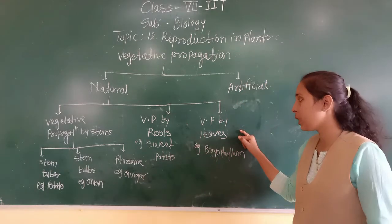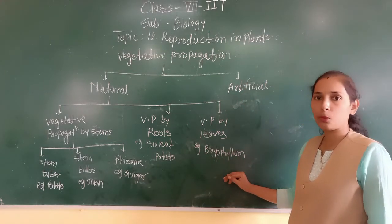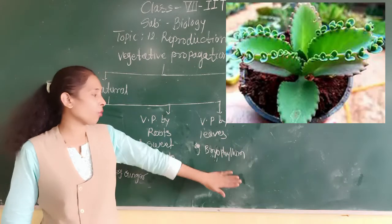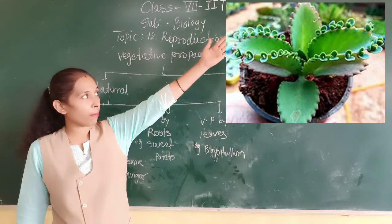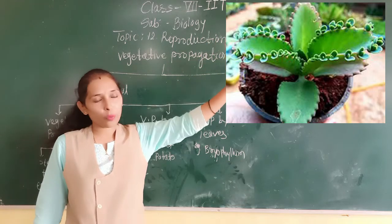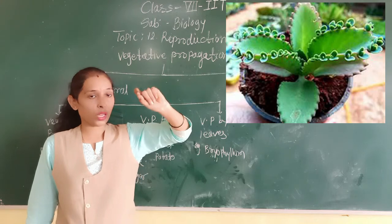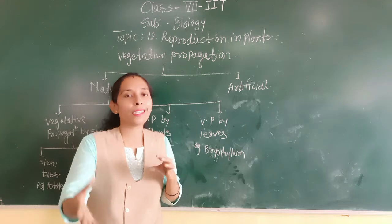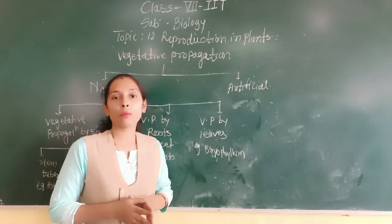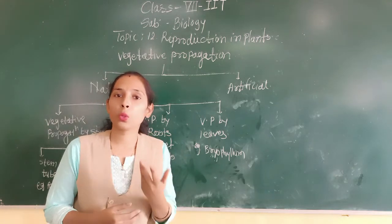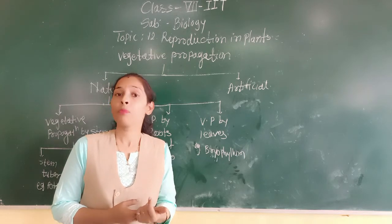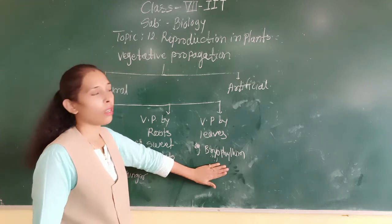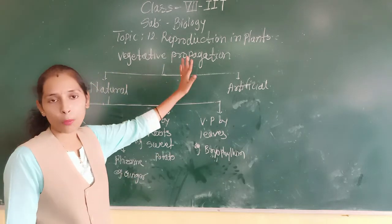Next, we discuss vegetative propagation by leaves. Here the first example is Bryophyllum. In the image you can see that on the margin of the leaves there are buds. When these buds get detached from the leaves and fall into moist soil, the buds start to grow as a new plant. In this way we can do reproduction of plants with the help of leaves — this is vegetative propagation by leaves.